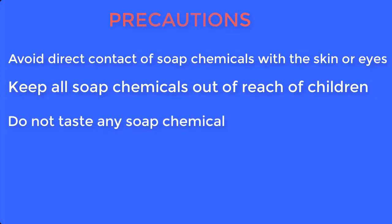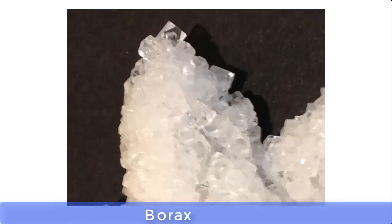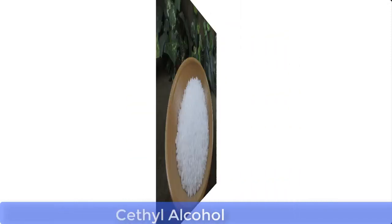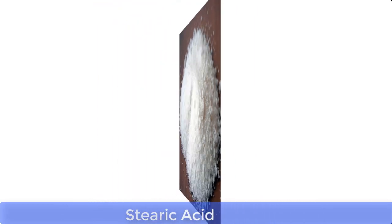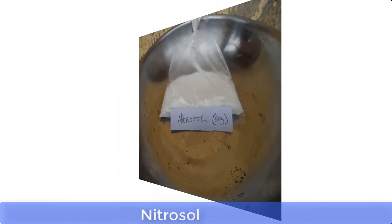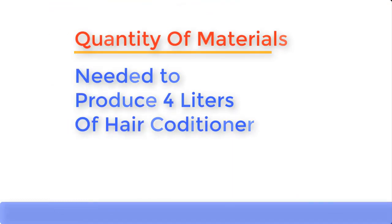These are the chemicals needed to produce hair conditioner: borax, sodium lauryl sulfate (also known as SLS), cetyl alcohol, stearic acid, cruder wax, nitrosol, paraffin oil, dicot A, and perfume. Now let's establish the quantities of materials needed to produce four liters of hair conditioner.